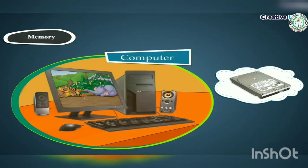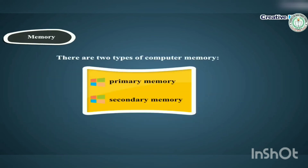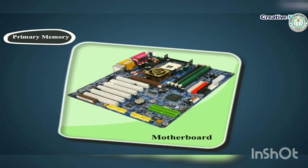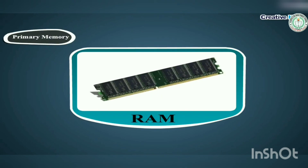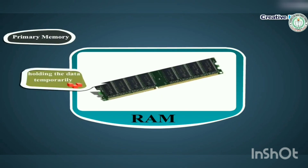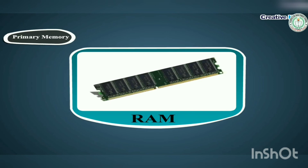Memory: The data and instructions entered into the computer through input units are stored inside the computer in storage media, known as memory. There are two types of memory: primary memory and secondary memory. Primary memory is the main memory of the computer and is present on the motherboard. It is of two types: RAM and ROM. RAM (Random Access Memory) is used for holding data temporarily while the computer is working.